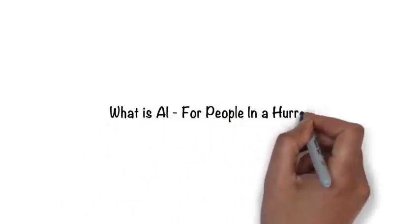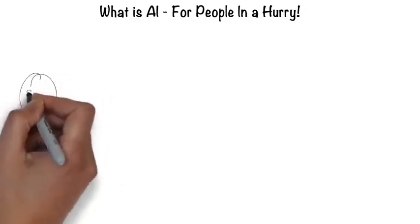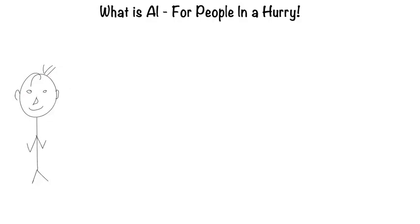Artificial intelligence for people in a hurry. The easiest way to think about artificial intelligence is in the context of a human. After all, humans are the most intelligent creatures we know of.